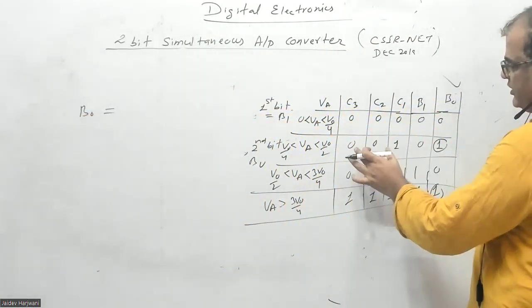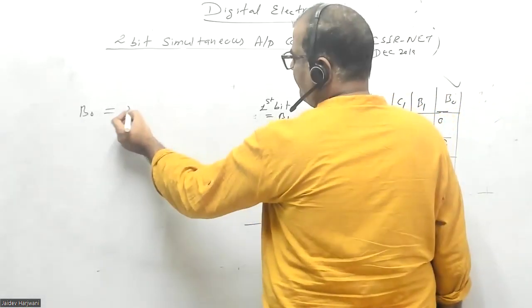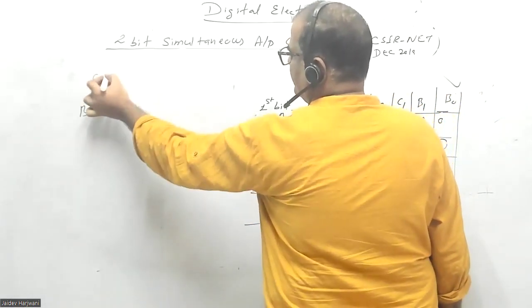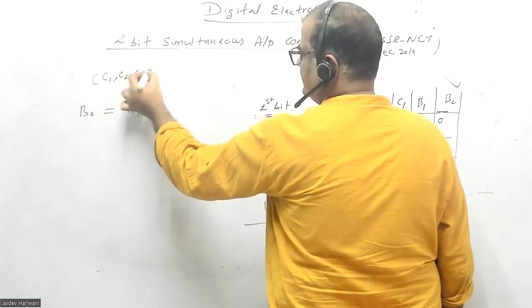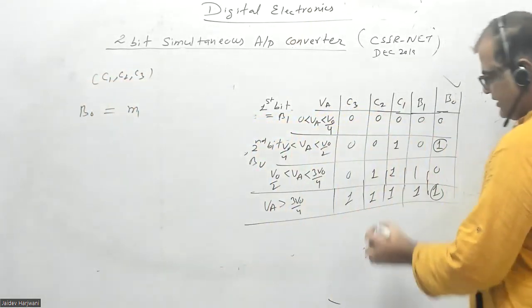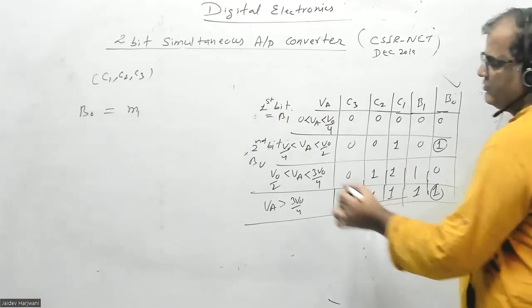b0 is equal to: you have one here and this one corresponds to 001, meaning you have an m1 minterm. Since b0 is a function of C1, C2, and C3, you have m1, and then you have one here at 111, which is m7.